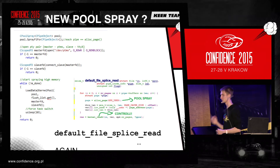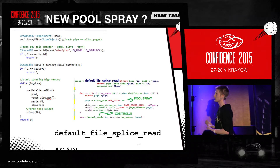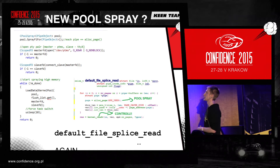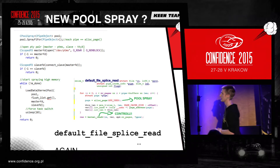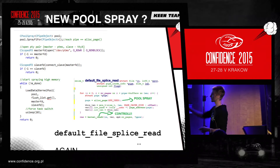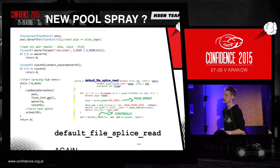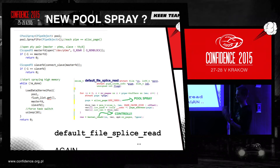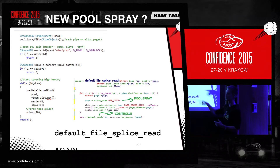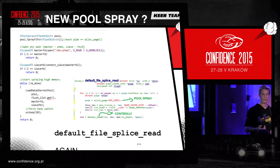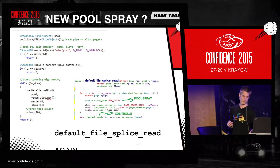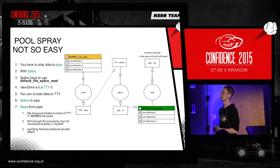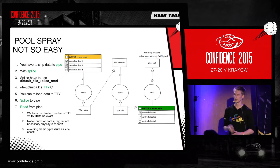You can only control that if you use pool spraying. But pool spraying can be kind of hard, especially on a 64-bit platform. For that, we introduce a new pool spraying technique. We use the default_file_splice_write function, because you have alloc_page which allocates a new page and kernel reads data to the page. The problem is that you can create only about 2^12 pipes in one process.